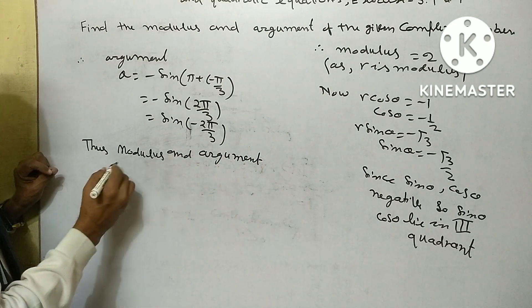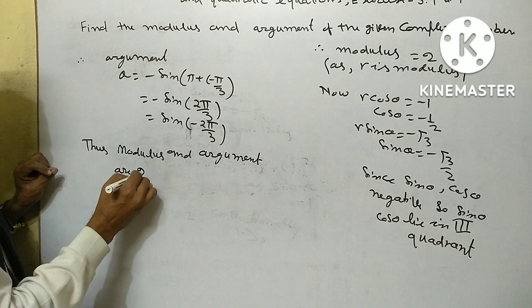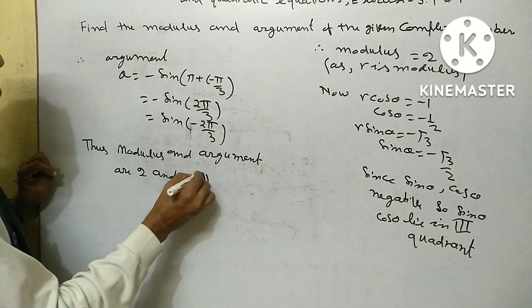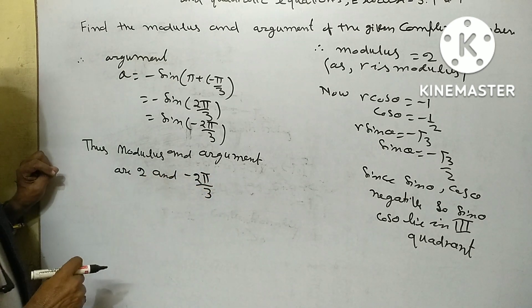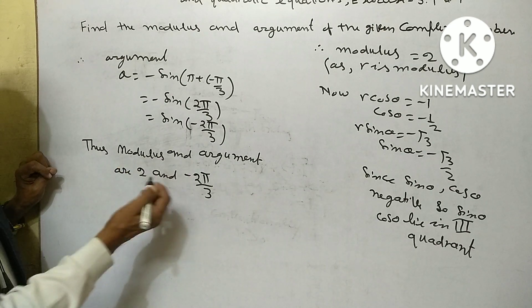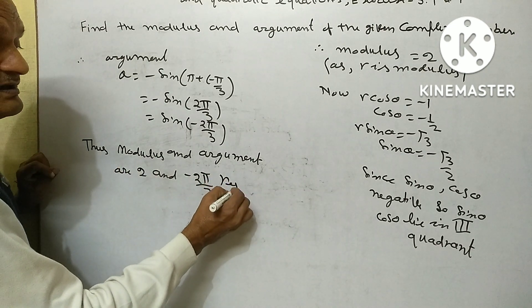Thus modulus and argument are 2 and minus 2 pi upon 3 respectively.